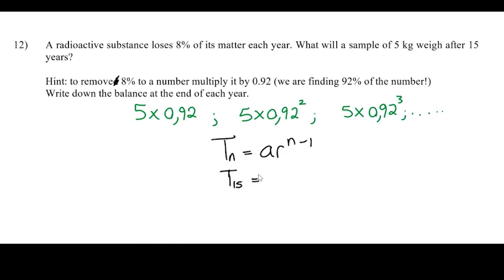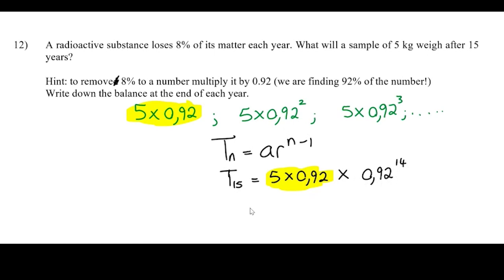So t15 = 5 × 0.92 (that's my 'a' value) × 0.92^(15−1) = 5 × 0.92^15. That works out to approximately 1.431 kilograms. If one uses grams, we start with 5000 g and the answer is 1431 g, which is 1.431 kg.